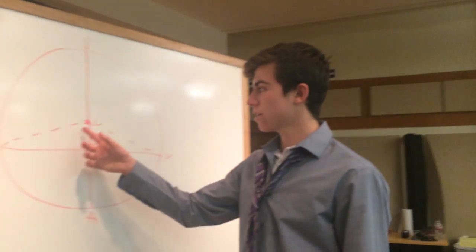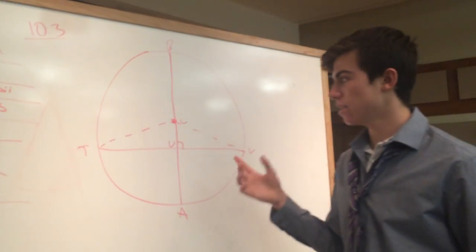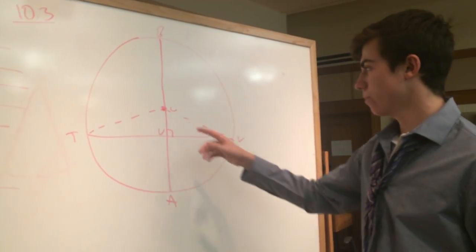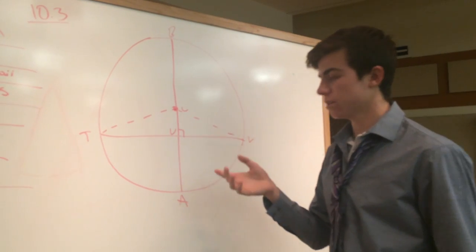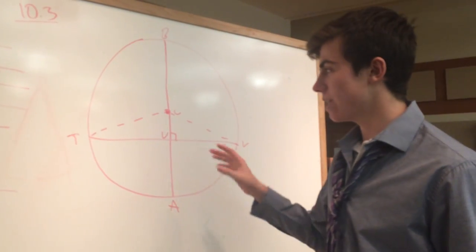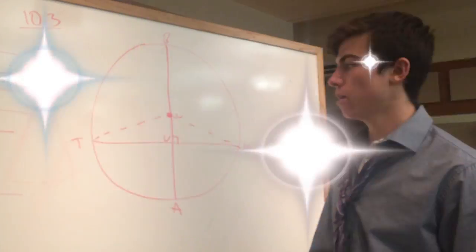The first thing I did is create two auxiliary lines that are radii of the circle. Those are equal because by definition, all radii are exactly the same length.